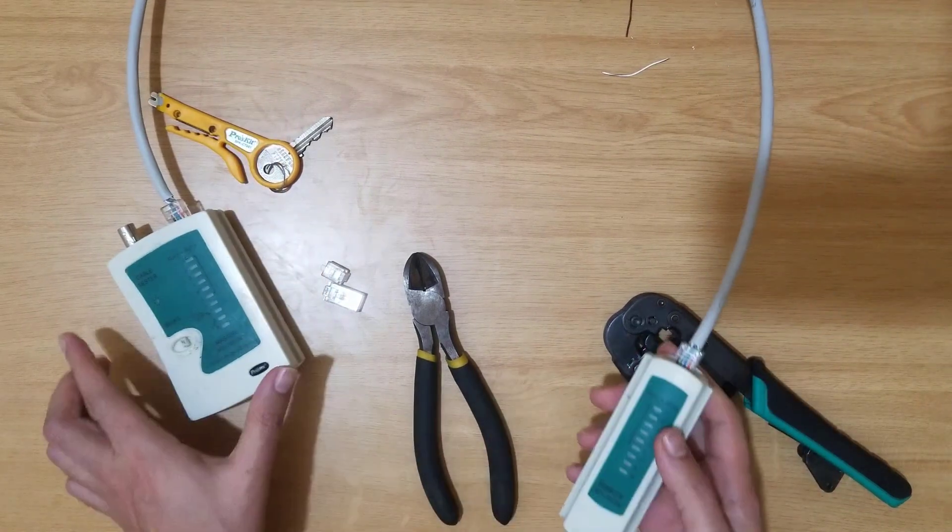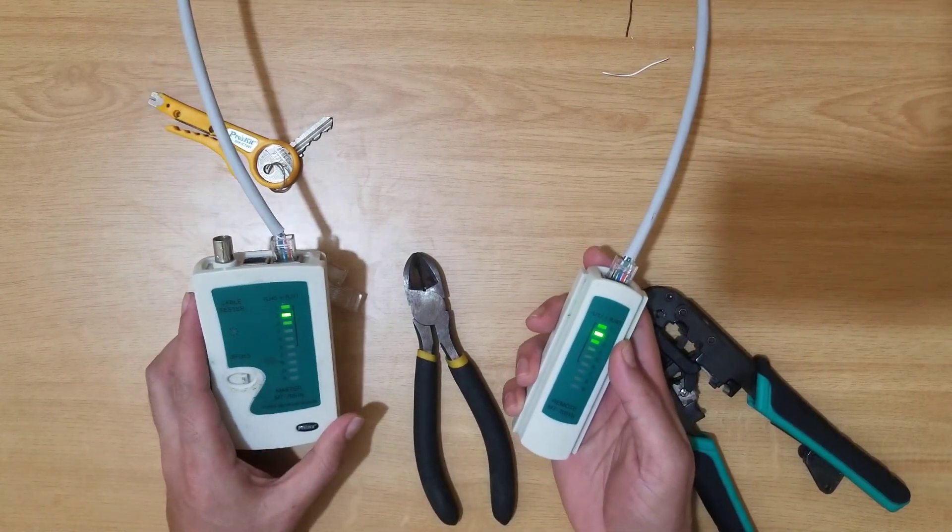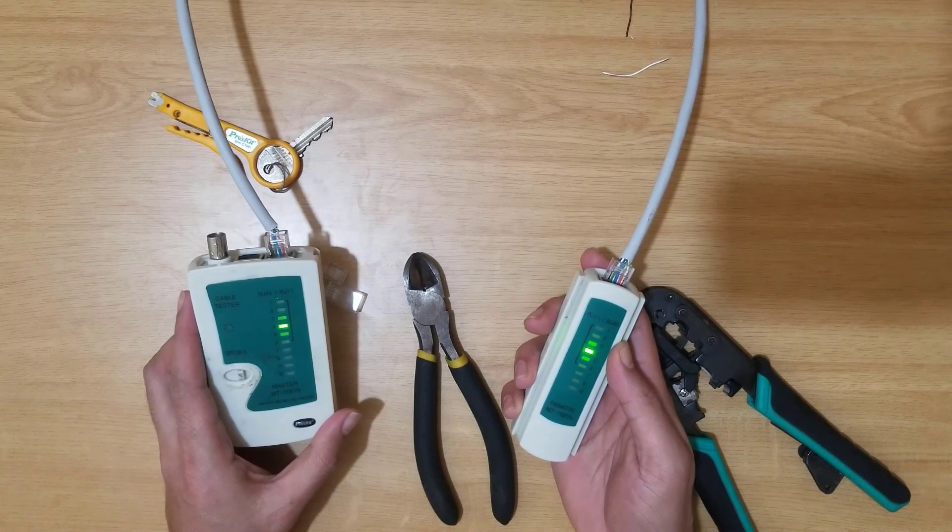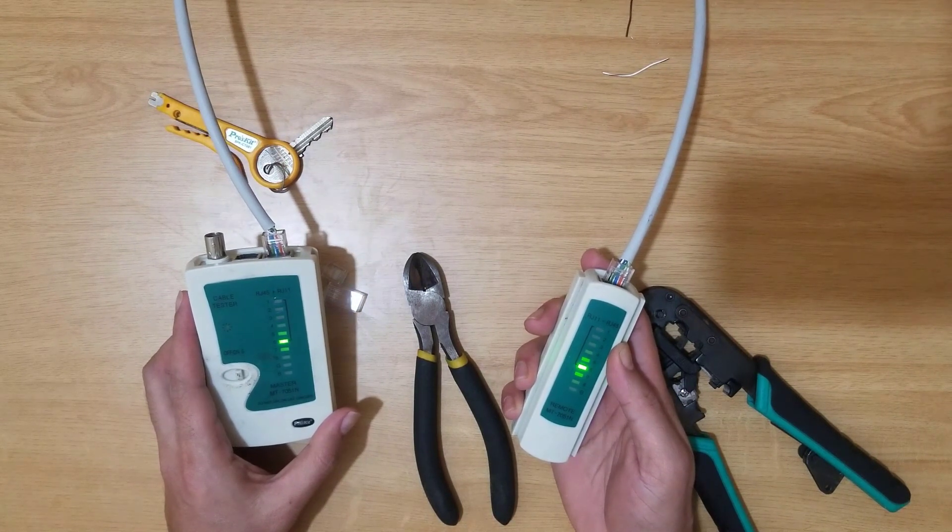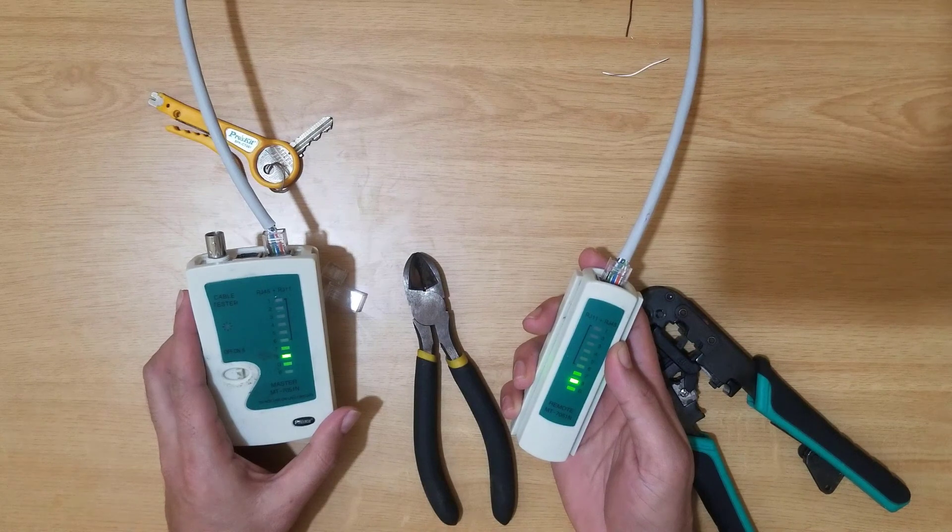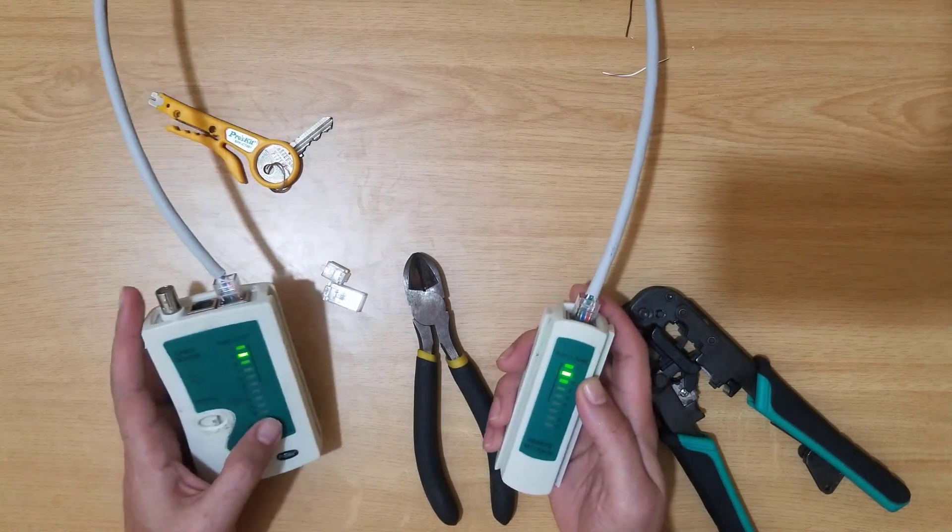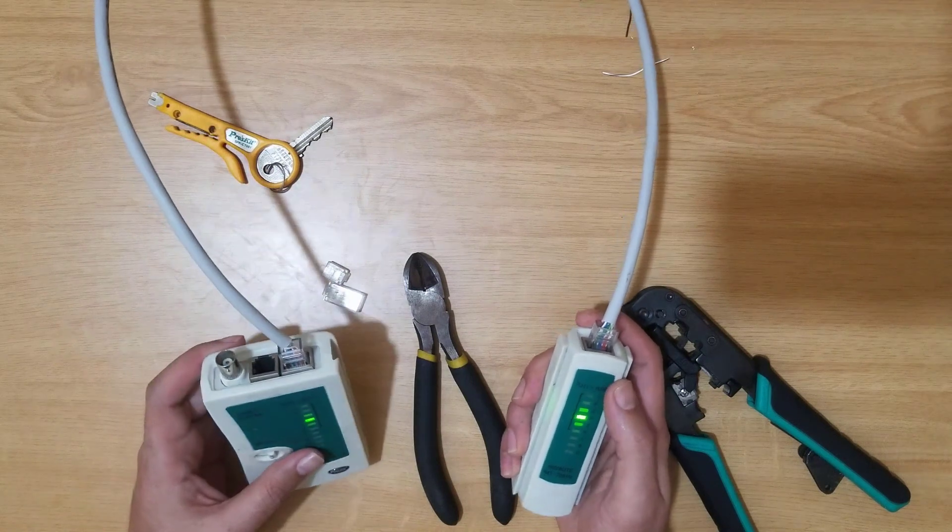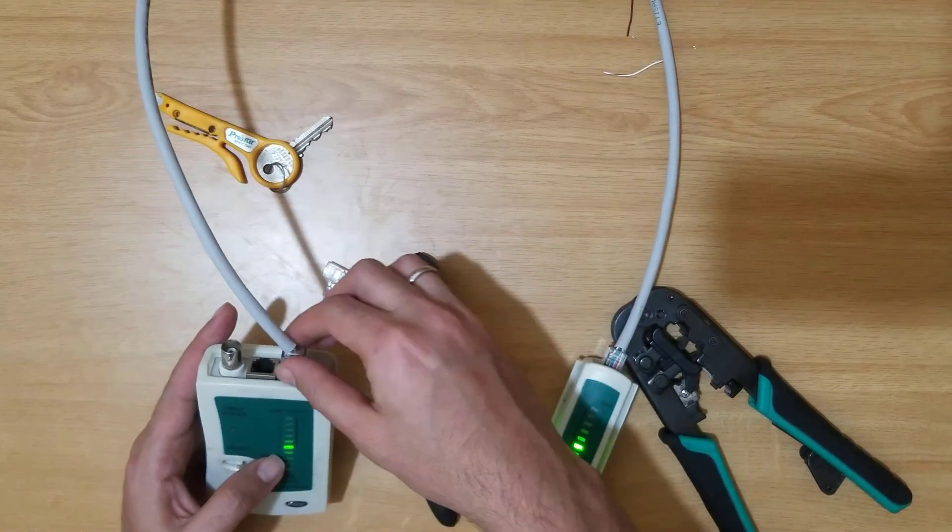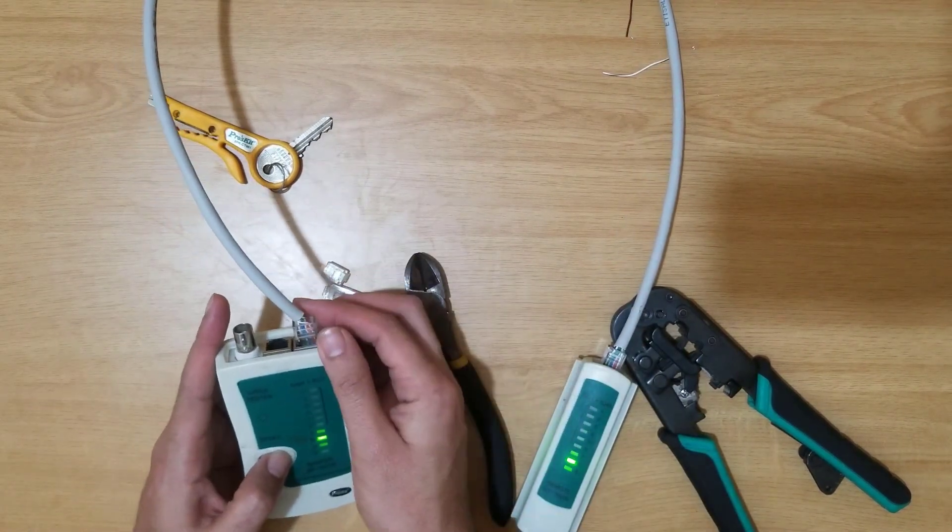You can see now: first, second, third, fourth, fifth, six, seven, eight. It means this is perfect connectivity. All pairs are connected and color coding is also proper. So that's it.